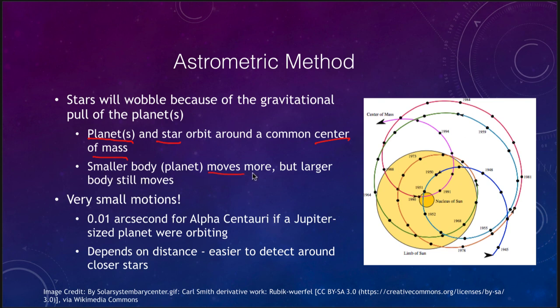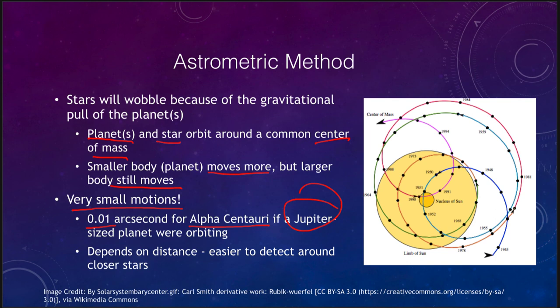While the smaller body moves more, the larger body — the star — still does move, and that is something that can be detected. However, it is extremely small and difficult to detect. For Alpha Centauri, the nearest star to us, if we had a Jupiter-sized planet orbiting it, that would give a shift of 0.01 arc seconds. That's definitely detectable — we can detect even smaller motions than that. But it's extremely small, and this is for the nearest stars. If it gets a little further away, it's going to be harder and harder to detect these motions. The astrometric method significantly depends on distance.